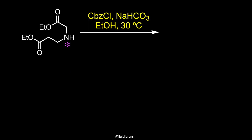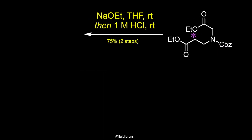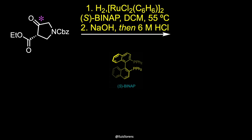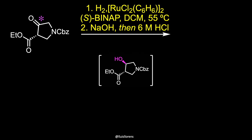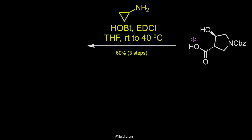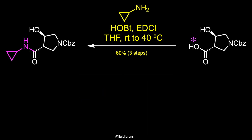The synthesis commenced with CBZ protection of the secondary amine. Then, glycine condensation delivered the corresponding pyrrolidine in 75% yield. Asymmetric hydrogenation using ruthenium catalysts with S-BINAP as the ligand provided this trans-pyrrolidine, and saponification of the resulting ester gave the corresponding carboxylic acid. Coupling of this carboxylic acid with cyclopropylamine delivered a crystalline amide that was isolated in 60% yield over three steps.